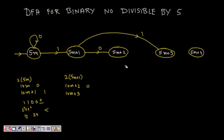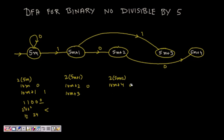For a number of the form 5m+2: multiplying by 2 gives 10m+4. If we append a 0, it is of the form 5m+4, so we go to that state. If we append a 1, it becomes 10m+5, which is divisible by 5 and leaves remainder 0, so we go back to the start state.